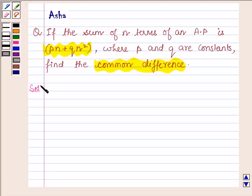Let us now begin with the solution. We are given that the sum of n terms, denoted by Sn, is equal to Pn plus Qn square.